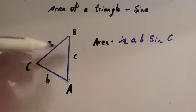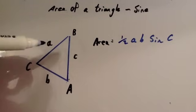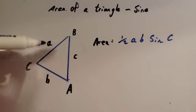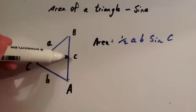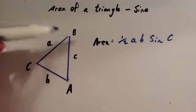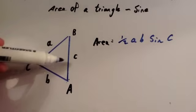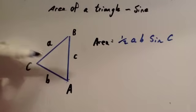It would also work if you had a, c, and b. All you need is two sides and the angle in between it. So I've chosen a, b, and the sine of C. You could do a times c times by the sine of b and half it, or you could do b times c times the sine of a and then half it.